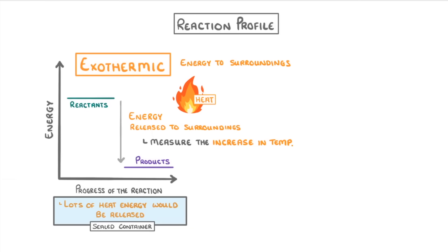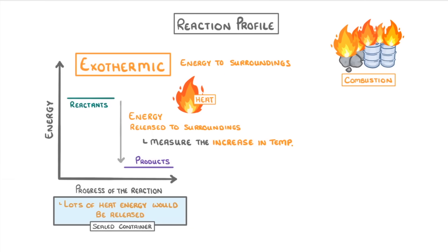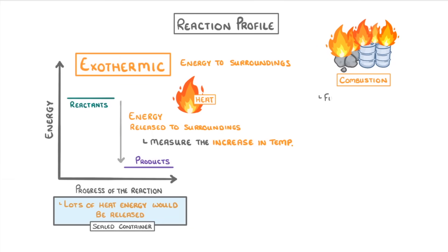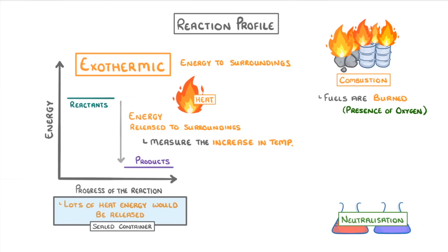The most common type of exothermic reaction is combustion reactions, in which fuels are burned, usually in the presence of oxygen, like in our reaction. Other examples include neutralization reactions between acids and bases, and most oxidation reactions.